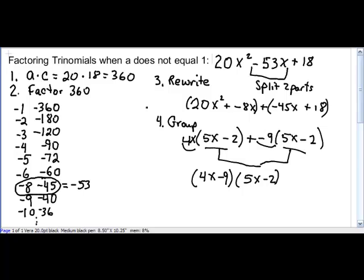So again, to summarize, we take a times c, the first number times the last. We factor those looking for a pair of numbers that add up to be our b value.